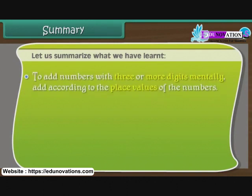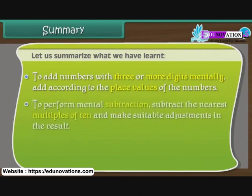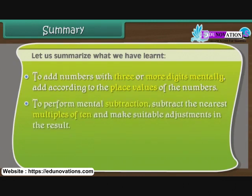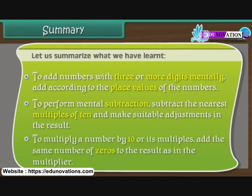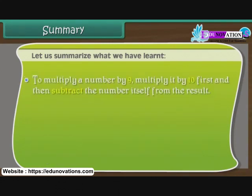To add numbers with 3 or more digits mentally, add according to the place values of the numbers. To perform mental subtraction, subtract the nearest multiples of 10 and make suitable adjustments in the result. To multiply a number by 10 or its multiples, add the same number of zeros to the result as in the multiplier. To multiply a number by 9, multiply it by 10 first and then subtract the number itself from the result.